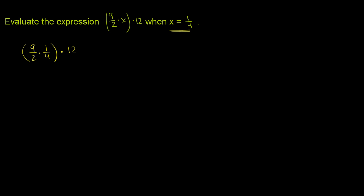What I mean by that is, instead of doing the 9 halves times 1 fourth first, we can do the 1 fourth times 12 first. This is the associative property of multiplication.